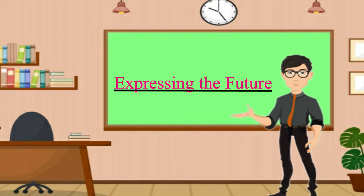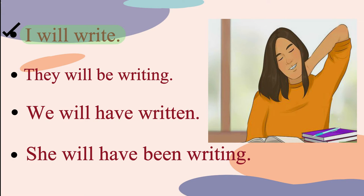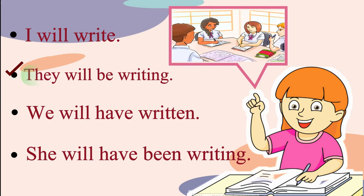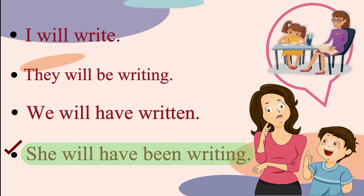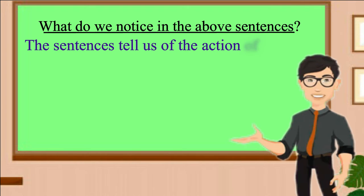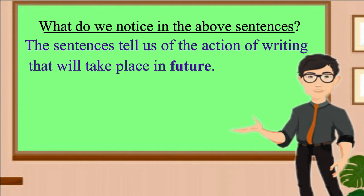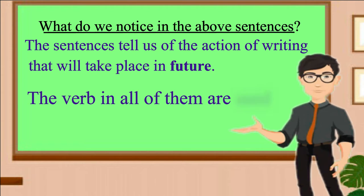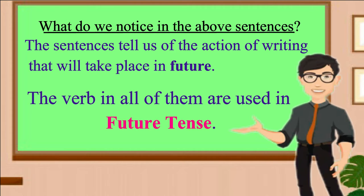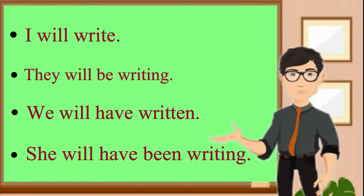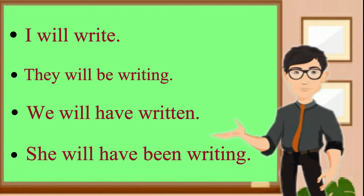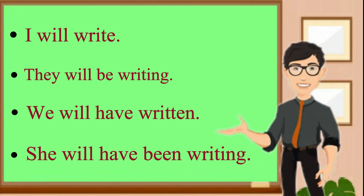Please read these sentences: I will write. They will be writing. We will have written. She will have been writing. What do we notice in these sentences? The sentences tell us of the action of writing that will take place in the future. The verbs in all of them are used in future tense. However, all four sentences are different in the sense that they use a different form of the future tense. Let us see what those four forms of the future tense are.